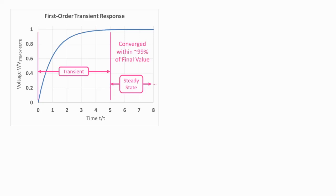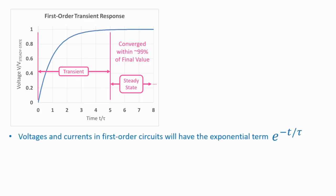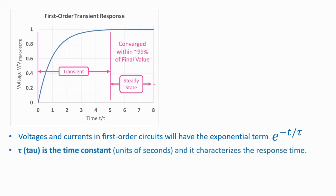Let's talk about how to characterize the time it takes for a circuit to reach steady state. Voltages and currents in first-order circuits will all have an exponential term of the form e to the minus T over tau. We define tau to be the time constant in units of seconds. Tau characterizes the response time of the circuit — that is, how rapidly the voltages and currents converge to a final value.